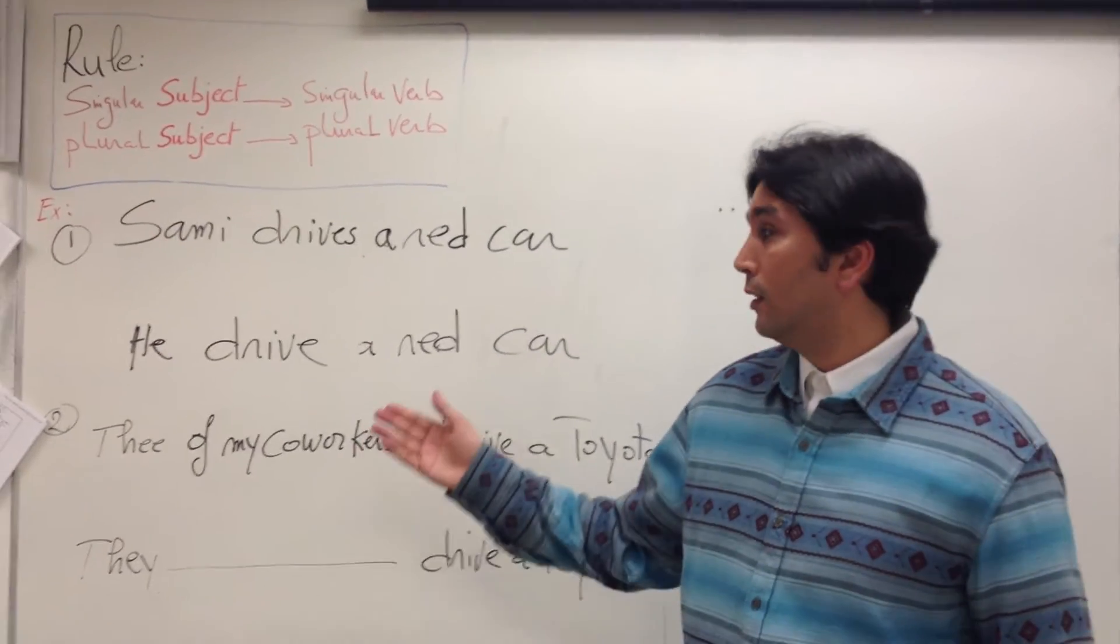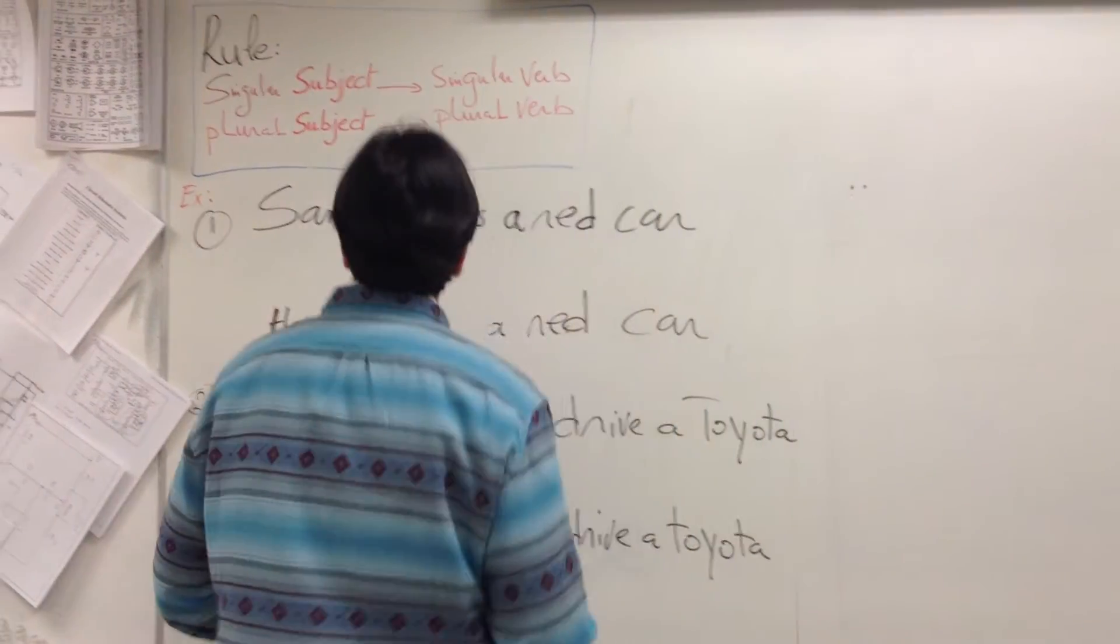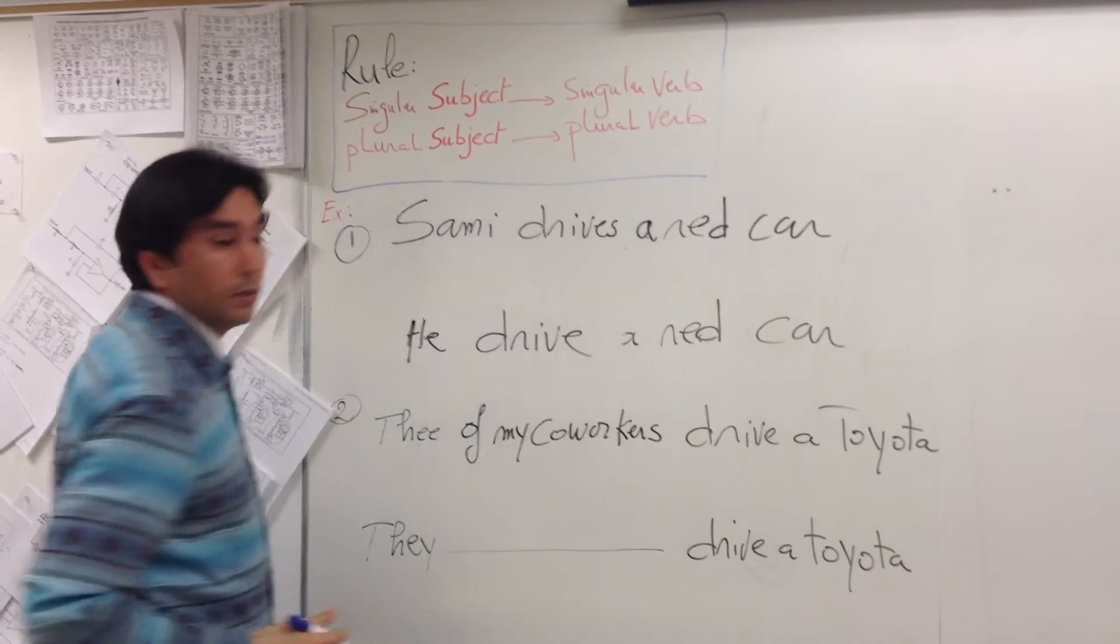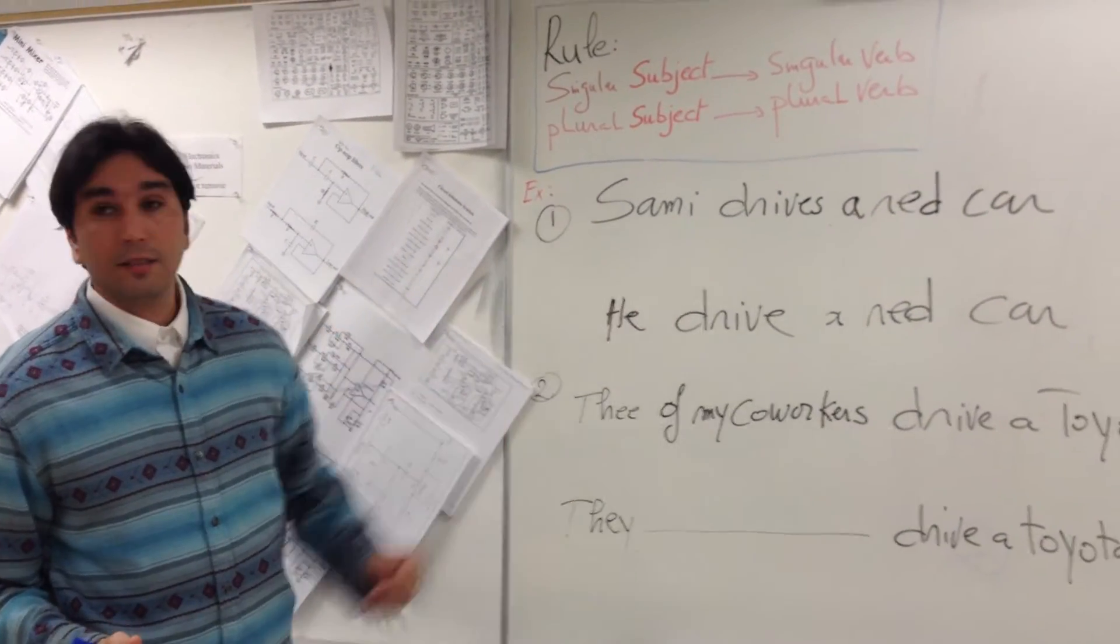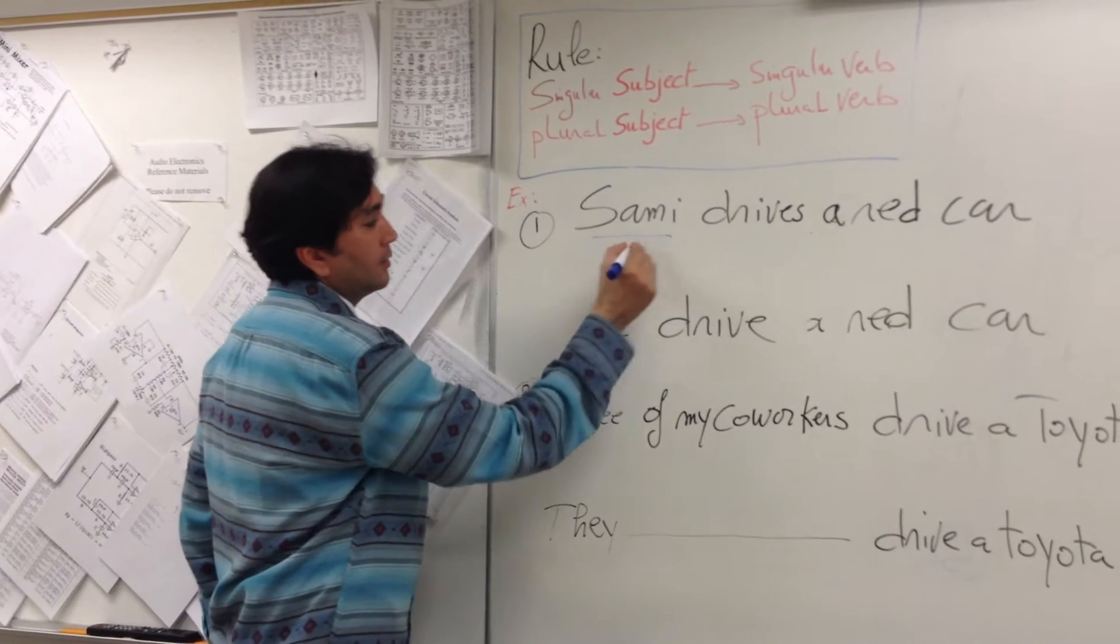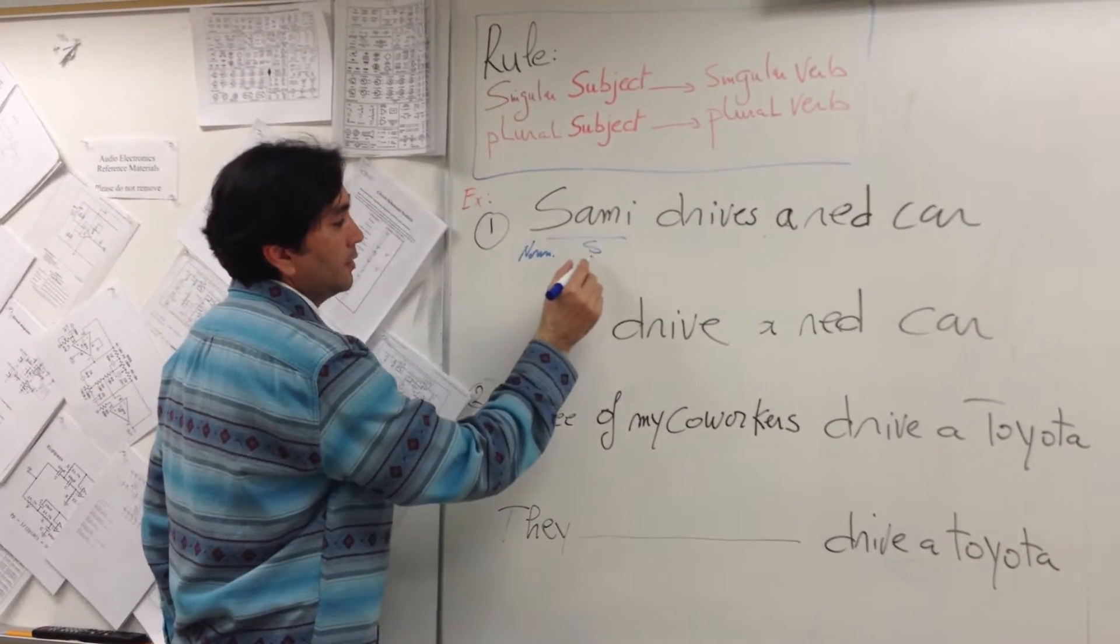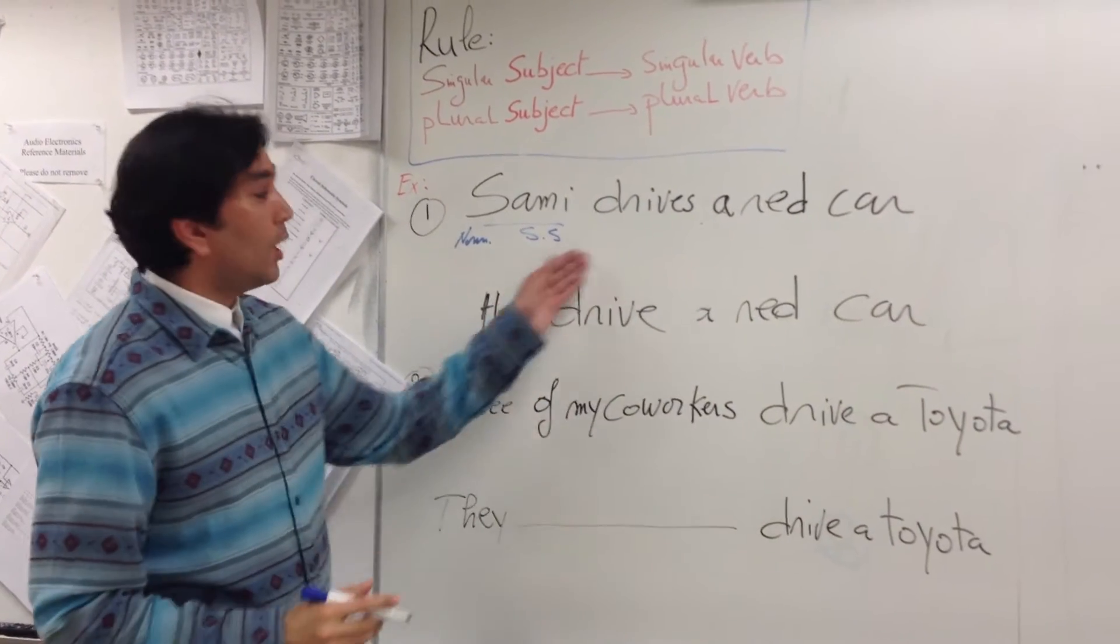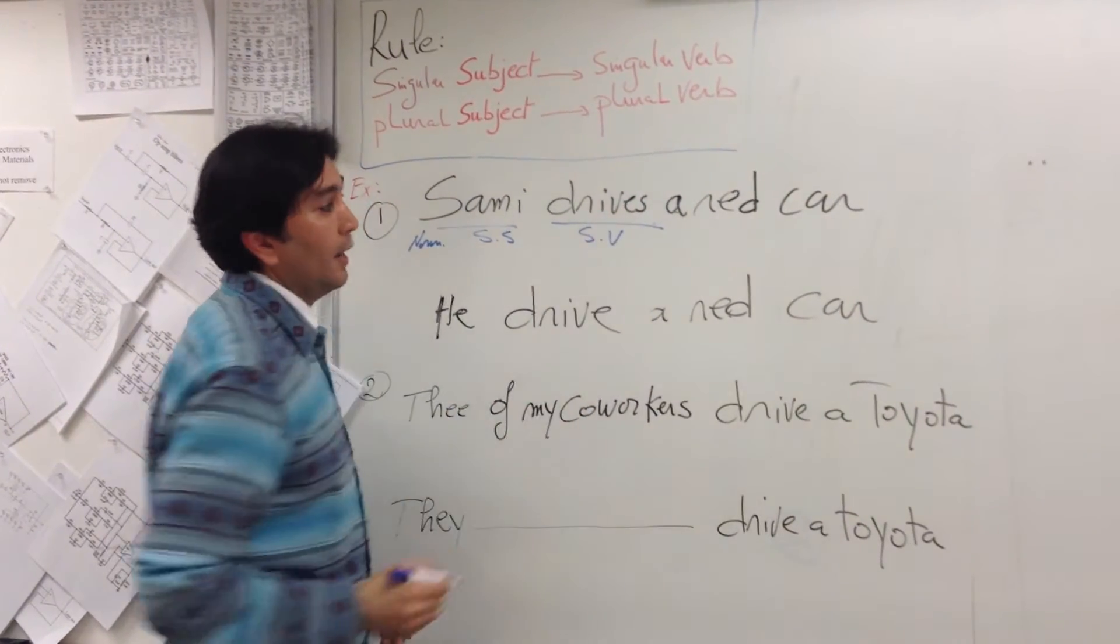Let's look at these examples. These are simple examples on the board. Let's examine these examples. Sammy drives a red car. Let's find the subject and verb in this sentence. Sammy is the subject. Sammy is a noun. Sammy is a singular subject, followed by a singular verb: drives.